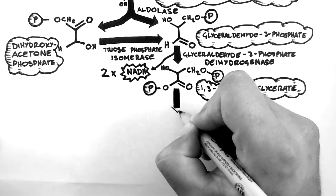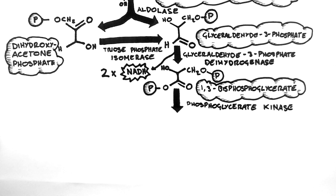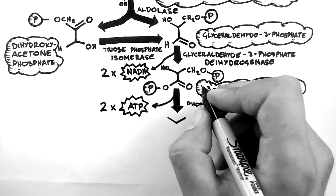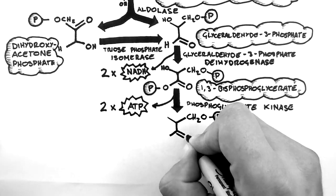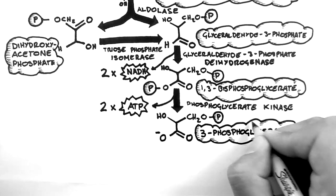Here the molecule meets another kinase, phosphoglycerate kinase. We saw above that kinases can giveth phosphate, but they can also taketh phosphate away. That's exactly what happens here. Two ATP are produced by taking phosphate from the 1,3-bisphosphoglycerate molecules. This produces the molecule 3-phosphoglycerate.